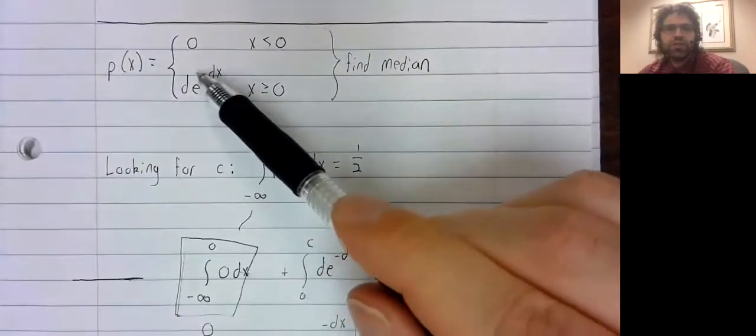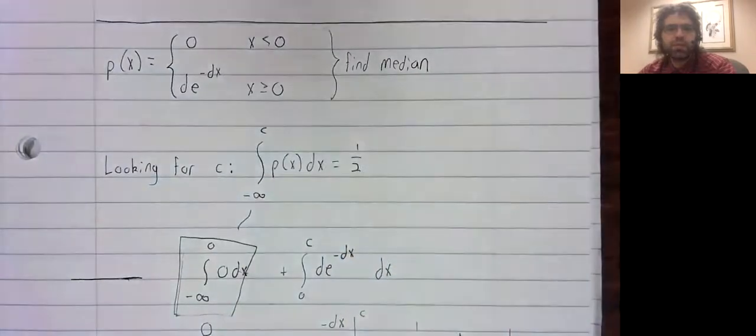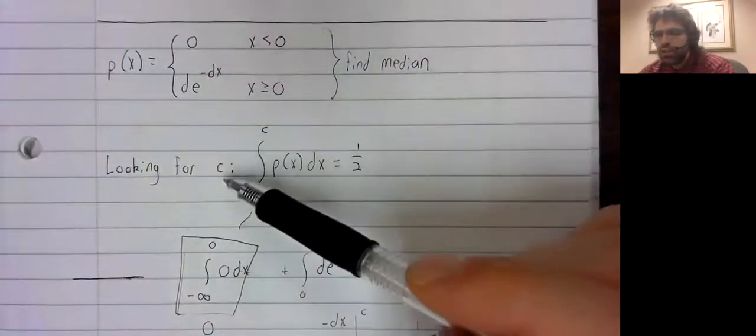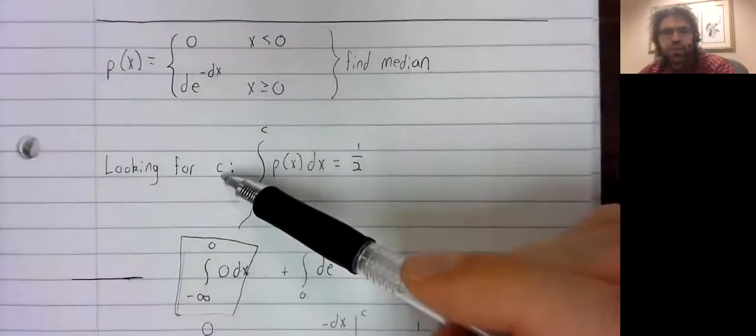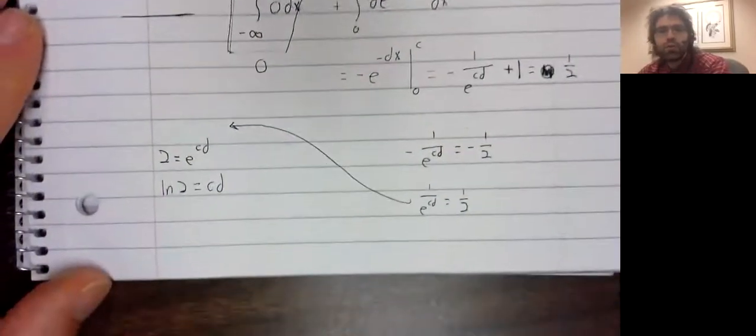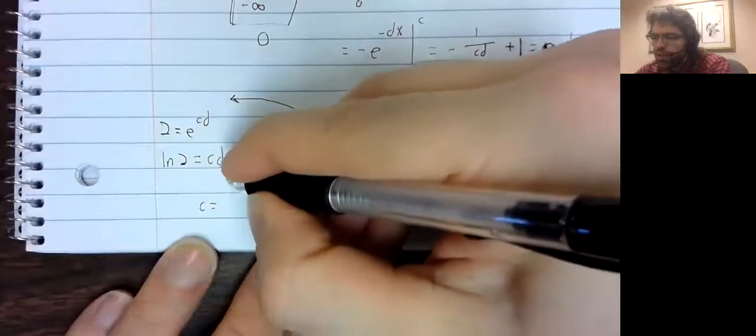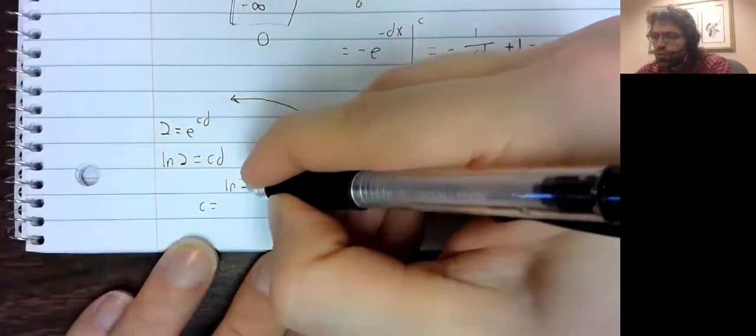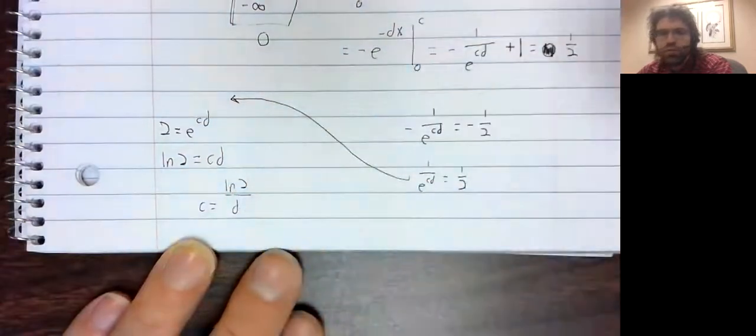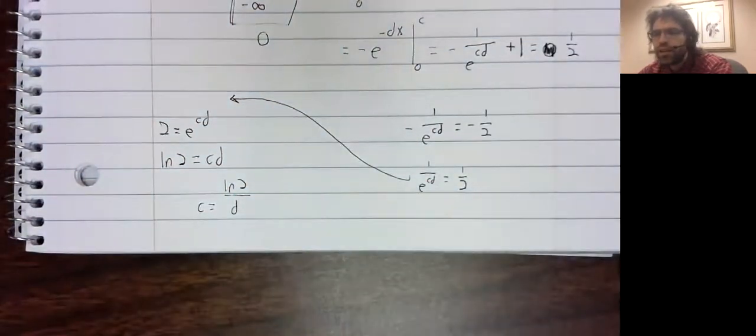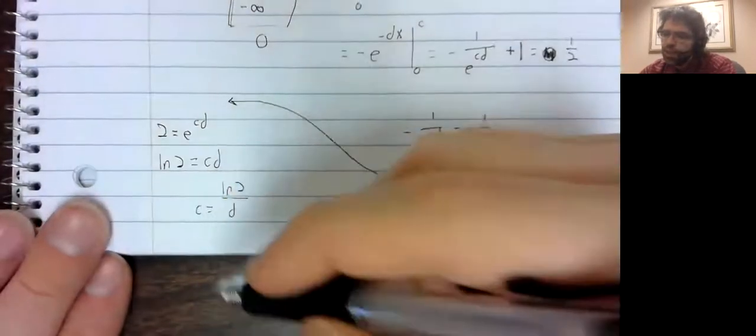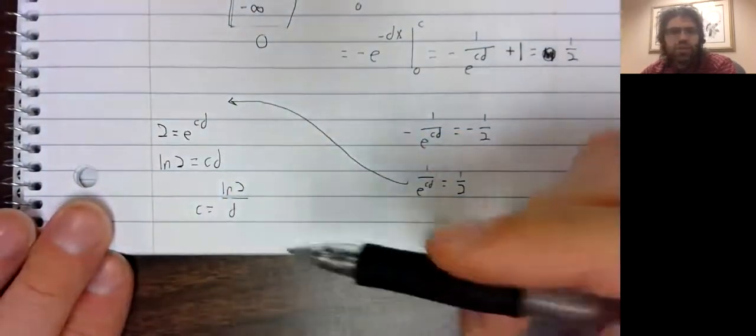D is a constant; it's part of the probability distribution. It's C we're looking for. C equals the natural logarithm of two divided by D. And that's the median. This problem is over.